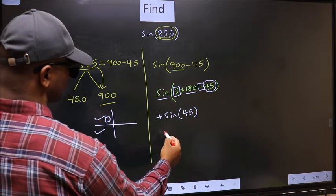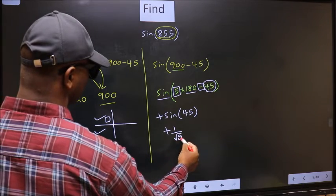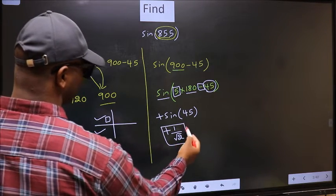So, we should put plus. So, plus sin(45) is 1 by root 2. This is our answer.